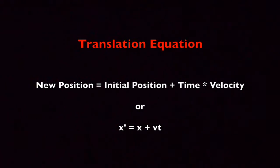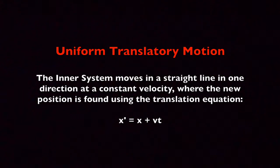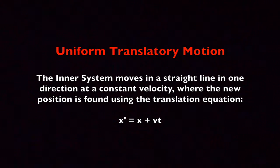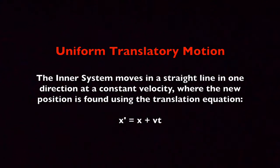This equation is called the translation equation, and it is one of the most important equations associated with classical mechanics. In fact, Einstein has a name for the motion this equation describes. He calls it uniform translatory motion. All this means is that the inner system is moving in one direction at a constant velocity and that the new position is found using the translation equation.